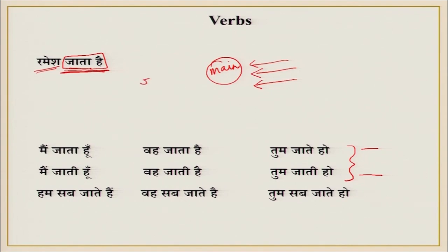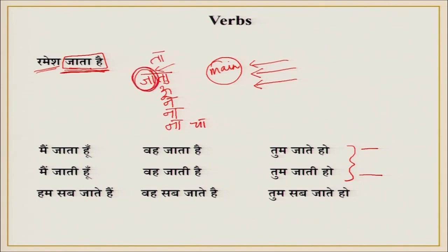For example, you saw 'jata' — so what is its base? We can say the base is 'ja.' From 'ja' we form: 'jata hoon,' 'jaunga,' 'jaane wala hoon,' 'jaana chahta hoon,' 'jaana chahiye,' 'jaata tha.' So in this way, 'ja' is the base — the root — and from it we make all conjugations and express different things. I am telling you this in Hindi first because exactly the same pattern exists in Japanese.